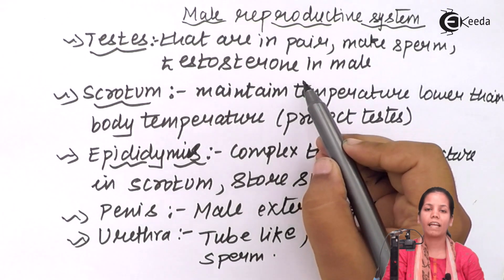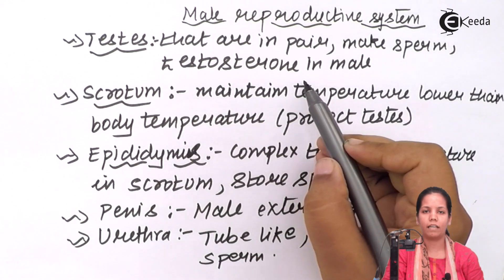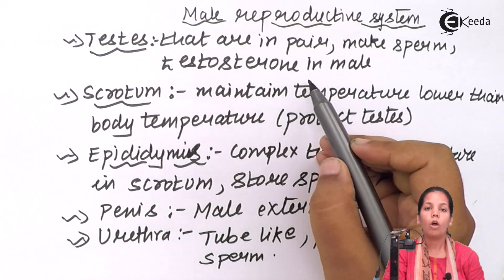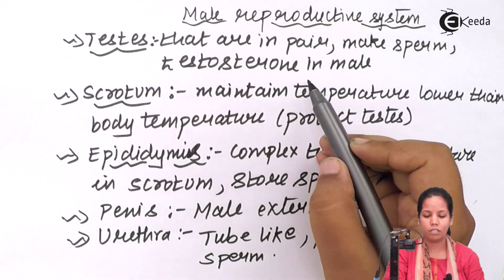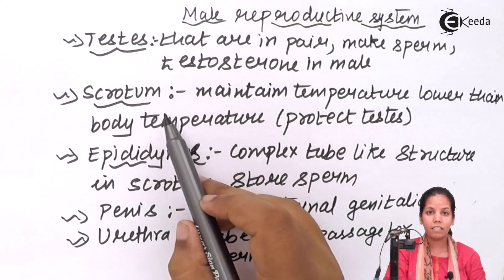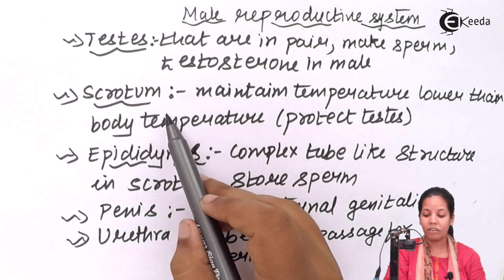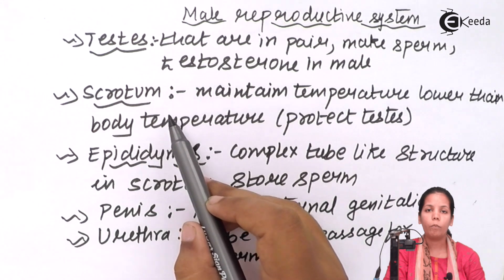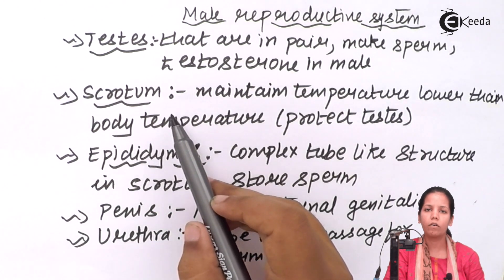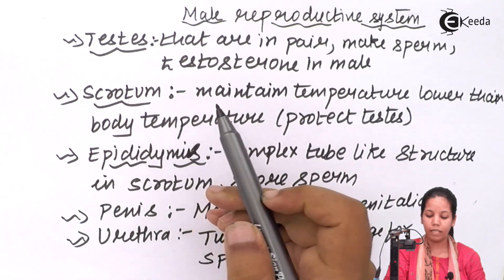All the male secondary structural characteristics like moustache formation, certain body weight formation, hoarseness of voice — all are due to testosterone. The scrotum tries to maintain a temperature lower than body temperature, because sperms can only survive at a particular temperature.